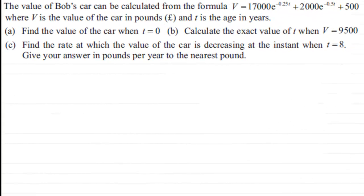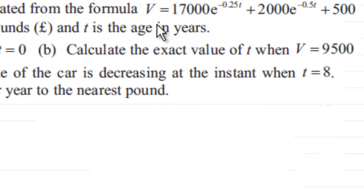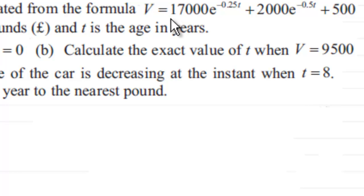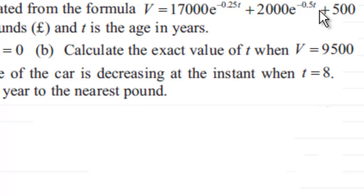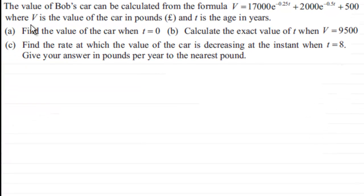In this example we're told that the value of Bob's car can be calculated from the formula V equals 17,000 e to the power minus 0.25t, plus 2000 e to the power minus 0.5t, plus 500, where V is the value of the car in pounds and T is the age in years.